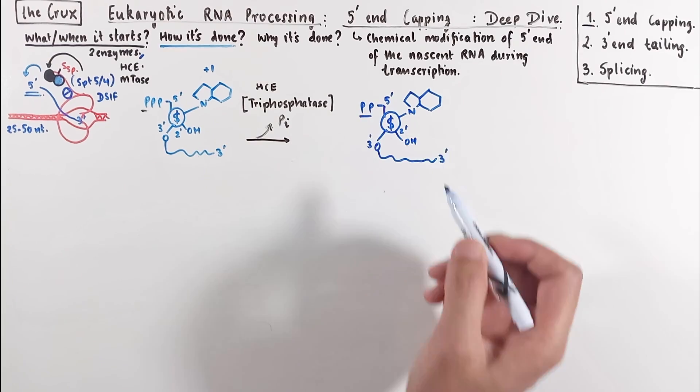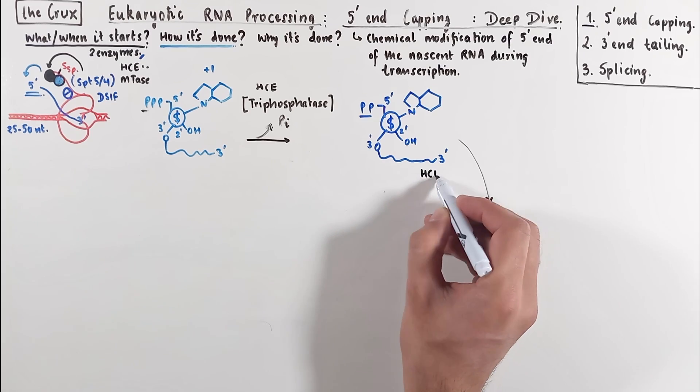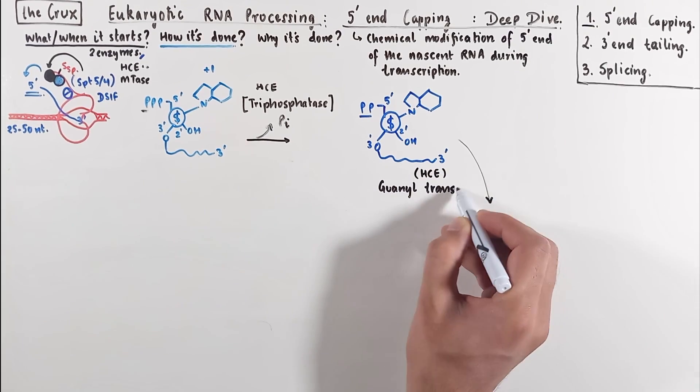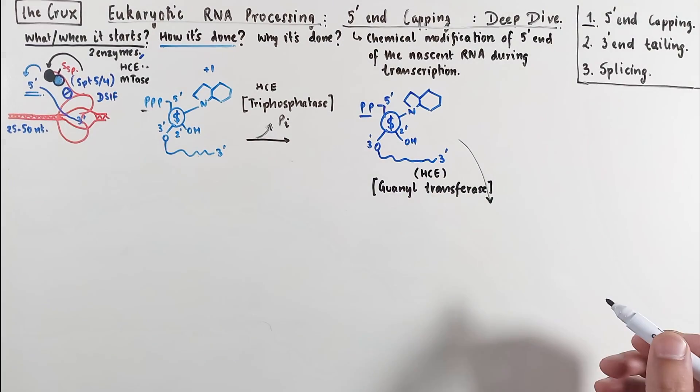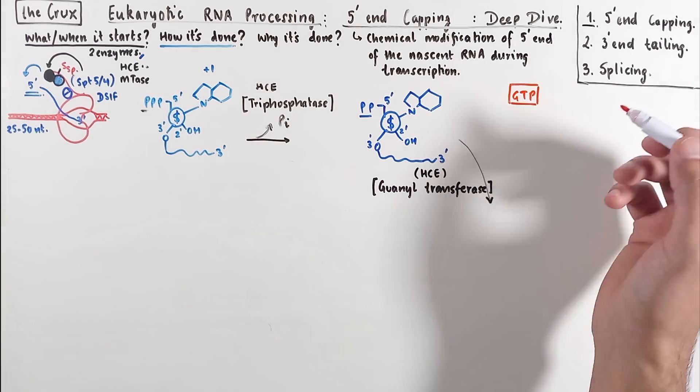As soon as this happens, the guanyltransferase activity of the human capping enzyme is initiated. This sort of coupling of both the activities allows a faster response to capping of the RNA. Now the guanyltransferase has to transfer a guanosine phosphate, which should come from a substrate. In this case, the substrate is a GTP.